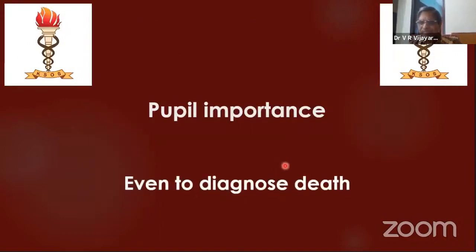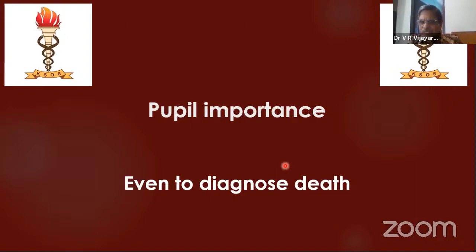What is the importance of the pupil? Even if a patient is dead, you can get clues from the pupil. Even if you cannot diagnose death by stethoscope or pulse, the pupil can give you a clue. If the pupil is dilated and fixed, you can diagnose death. The pupil is so important that it can even help diagnose death.